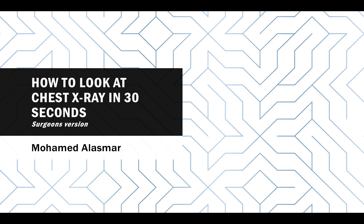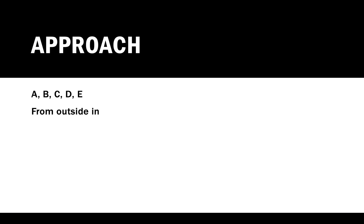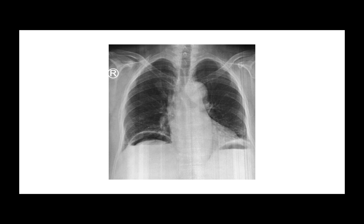How to look at chest X-rays in 30 seconds - surgeon's version. There are two approaches: the ABCDE approach and the approach from outside-in. For example, in a chest X-ray, you can spot air on the diaphragm. If you're a surgeon, look at the air on the diaphragm - it's normal on the right side; the left side is usually the normal gastric air bubble. However, to not miss anything, you should have a system.